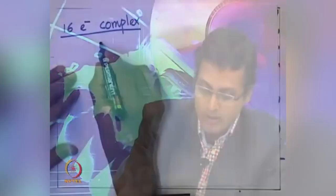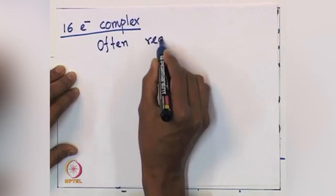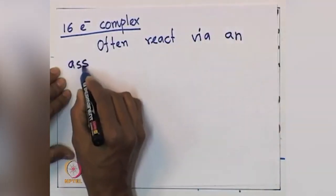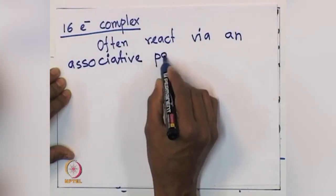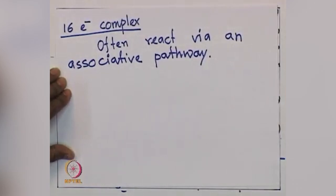Specifically, let us discuss the 16 electron complex. By now, I am sure you can give an example of a 16 electron complex. The 16 electron complex reactivity pattern is that they often react via an associative pathway. There are two ways of reaction: one is the associative pathway and another is the dissociative pathway.